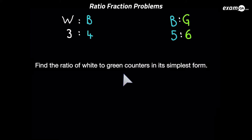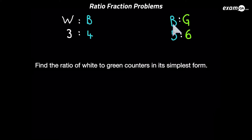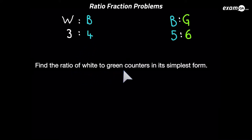The first type we're going to look at is when both ratios have something in common. In this question, one ratio is talking about white to blue and the other is talking about blue to green — both ratios have blue in them. What we do with these types of questions is try to make the blue in both of them the same amount, because with ratios you can multiply by any number without changing the ratio. We're going to be strategic and multiply so that the blues become the same, since the question wants us to work out the ratio of white to green, and the only way to do that is by making a ratio for all three colors.